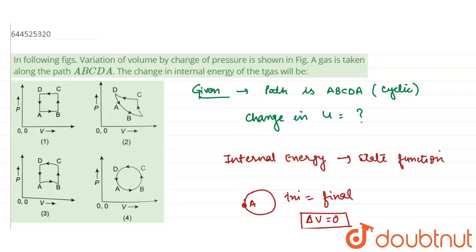Graphs will be zero because all the graphs are cyclic and all the graphs are having the same initial and final points, and since internal energy is a state function, it only depends on the initial and final point, not on the path. So our change in internal energy is zero for all the paths.